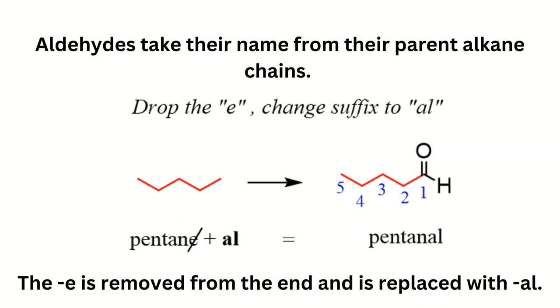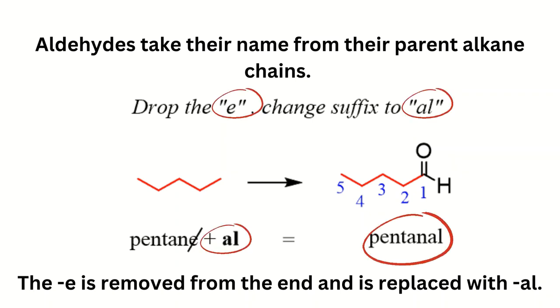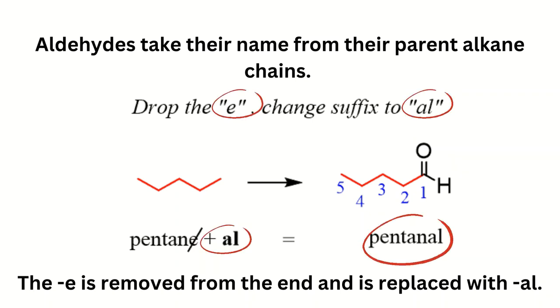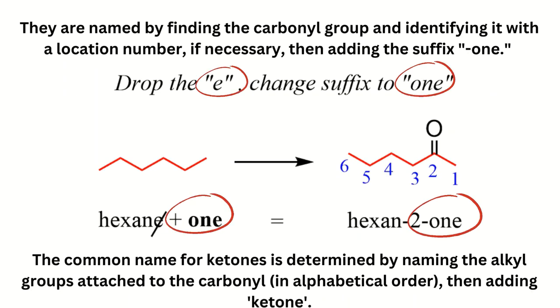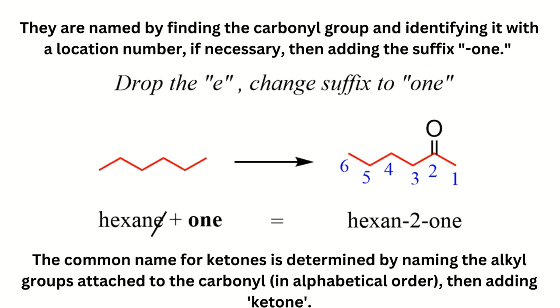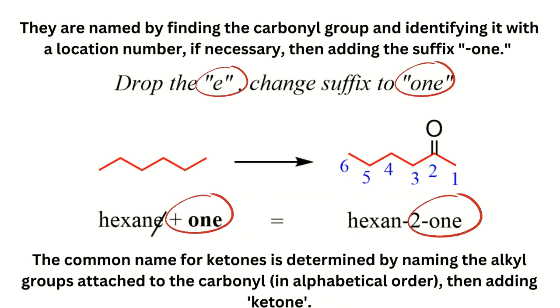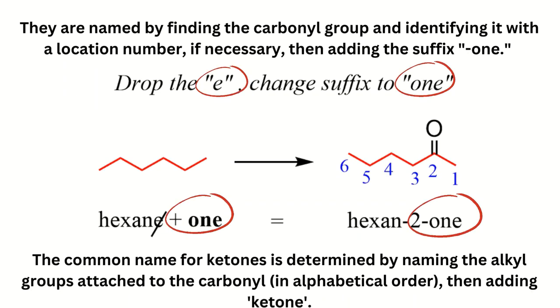Aldehydes take their name from their parent alkane chains. The 'e' is removed from the end and is replaced with 'al'. They are named by finding the carbonyl group and identifying it with a location number if necessary, then adding the suffix '-al'.